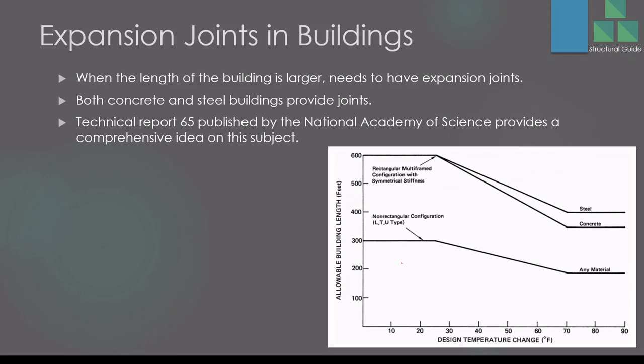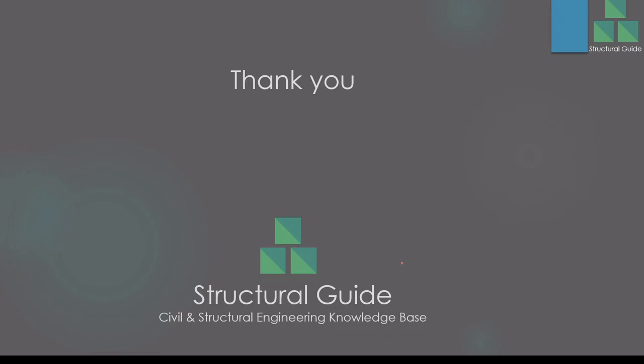As a general guideline, expansion joints in long buildings are maintained at spacing in the range of 60 to 80 meters, though the exact spacing should be determined by the structural designer. Technical Report 65 published by the National Academy of Science provides comprehensive guidelines on this topic and can be referred to for further information.